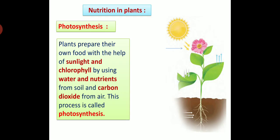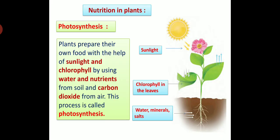Now observe this diagram carefully. You can see that plants get sunlight during daytime, and sunlight is necessary for photosynthesis. Chlorophyll is present in leaves, so plants prepare food using sunlight and chlorophyll. Then plants take water and minerals and salts from soil through roots. Plants get carbon dioxide from air.